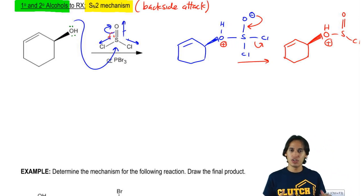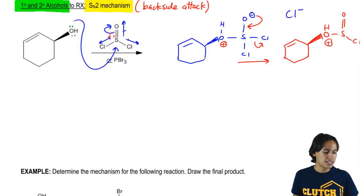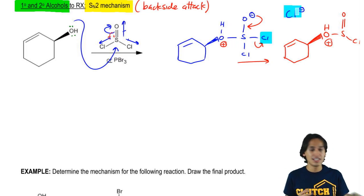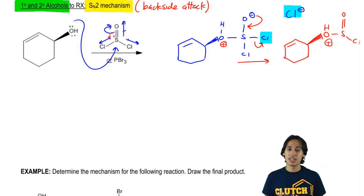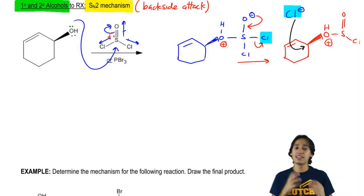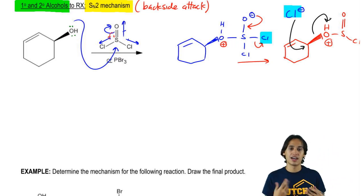What could kick it out? What could attack the carbon and kick out this big leaving group? It's going to be the Cl negative that just got kicked out. What's going to happen is that now we get the backside attack. The Cl attacks that carbon and kicks out this entire thing as the leaving group.